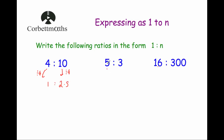Next: 5 to 3. To write this in the format 1 to n, we divide both numbers by 5. 5 divided by 5 is 1, and 3 divided by 5 is 0.6. So 5 to 3 written in the format 1 to n is 1 to 0.6.